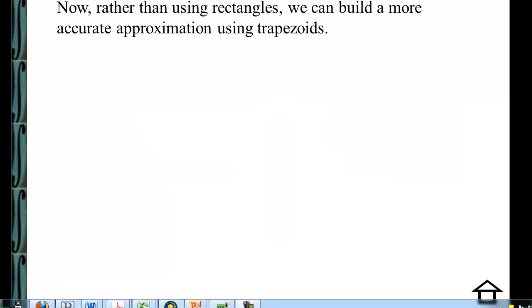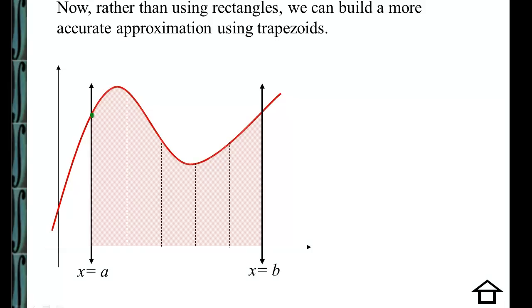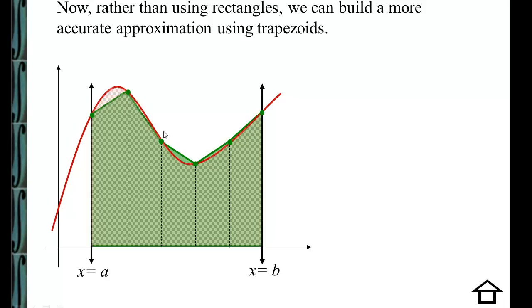Rather than using rectangles, we can build a more accurate approximation using trapezoids. We can see that if we connect both the left and right, we get trapezoids. Notice that what is left over is significantly smaller than had we drawn rectangles — we have less error than had we drawn either a left or a right rectangle. One thing to think about is: when is this trapezoid going to produce an area that is too small versus one that is too large?